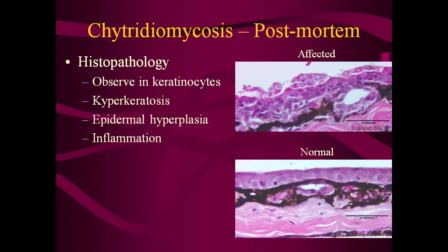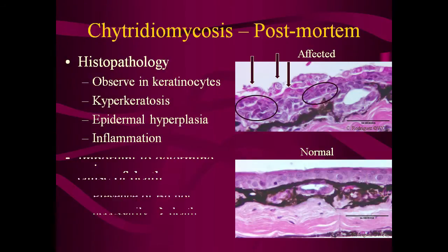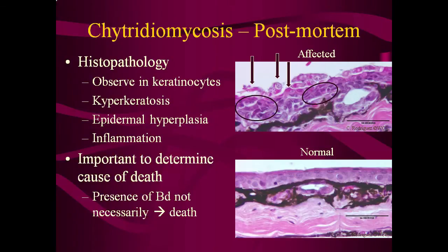Postmortem diagnosis is made via histopathology. The pathogen can be observed within the keratinocytes, both with and without the use of special stains. Other changes of the skin in reaction to the infection can also be evaluated. In animals affected by BD, there should be hyperkeratosis, epidermal hyperplasia, and various degrees of inflammation, in addition to the presence of spores. Remember that some species may be inapparent carriers, so the presence of BD found via PCR during a mortality event does not necessarily mean that the animals died of BD. For that reason, it is important to have both PCR and histopathology tools available when investigating a disease outbreak in any population.